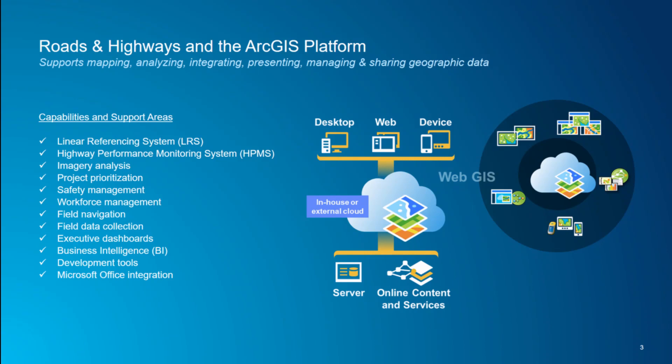Roads and Highways is part of the ArcGIS platform. It supports mapping and analysis. We can integrate it with other business systems, present the data in various web applications like Collector, and manage that data through a relational database and serve out services. We can take advantage of the platform and leverage the ability to take the event data we maintain and push that into a network dataset — which is what I'm going to be highlighting: how we make that jump.